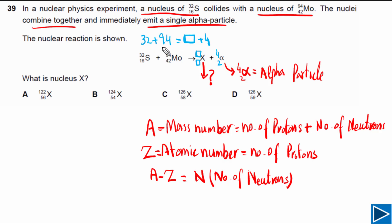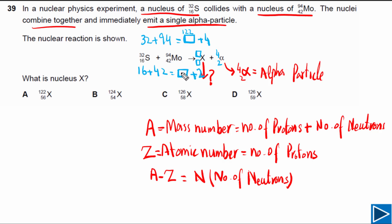Equating mass numbers: the total mass number on the left side is 126, and on the right side we have the mass of X plus 4. So the mass number of X has to be 122. For atomic numbers: 16 plus 42 equals 58. So 58 minus 2 means the atomic number of X has to be 56. So the answer for this question is nucleus X with mass number 122 and atomic number 56.